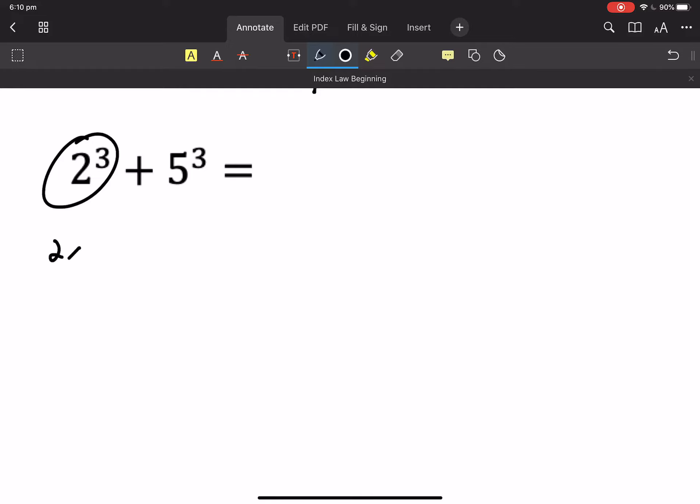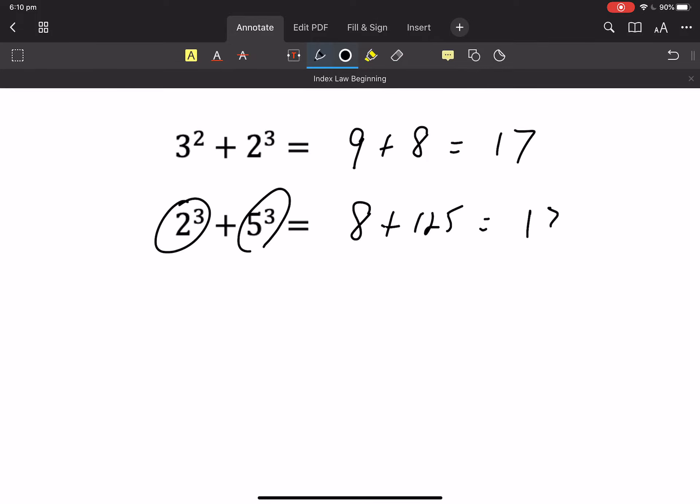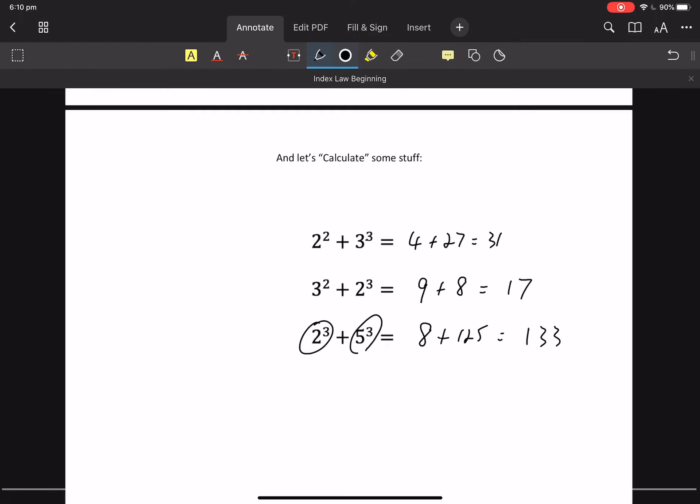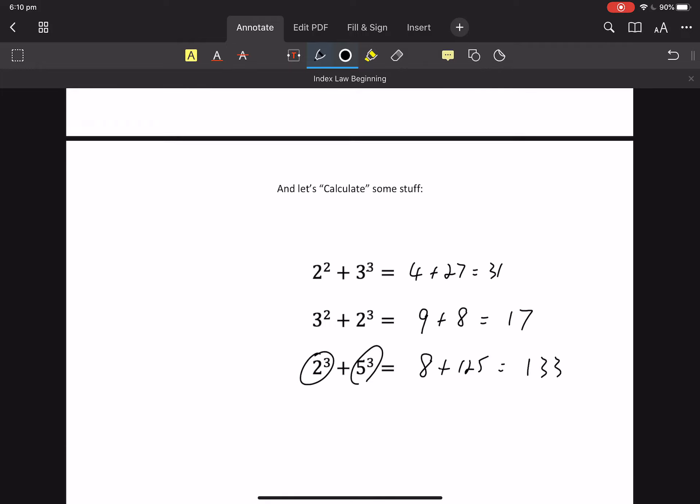2 cubed plus 5 cubed. Remember, 2 cubed is 2 times 2 times 2, which is 8. 5 cubed. 5 fives are 25, and 25 times 5 is 125. You're going to get to know 5 cubed and 5 to the 4 through your textbook work, I'm sure. You'll just remember it because you do it so much. And what's 8 plus 125? 133. So that's some calculate. Pretty easy stuff without a calculator. And that's it. Go do some practice.